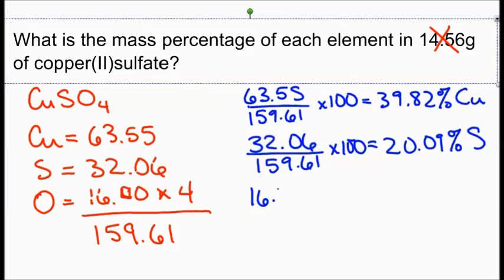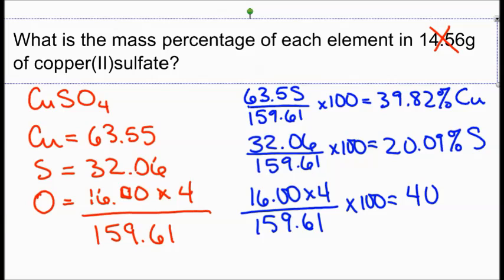Finally, oxygen at 16.00 times 4 of them divided by 159.61 times 100% will give us 40.10 percent.